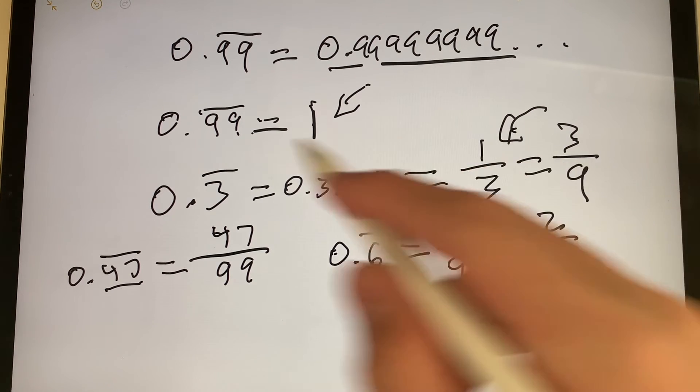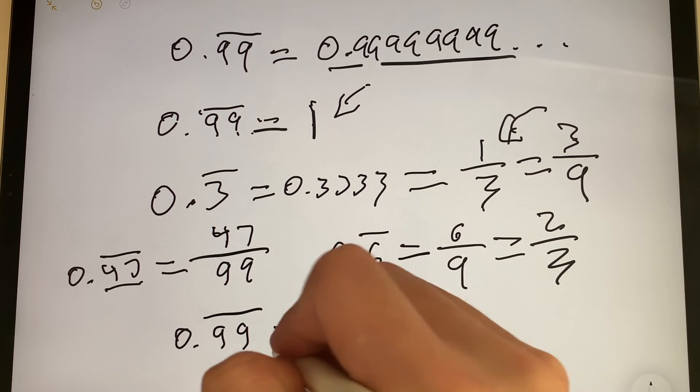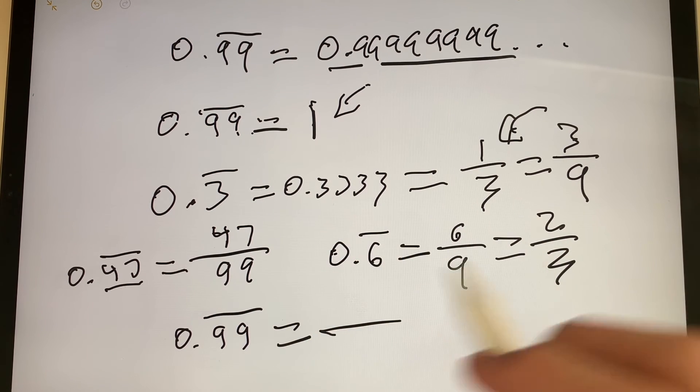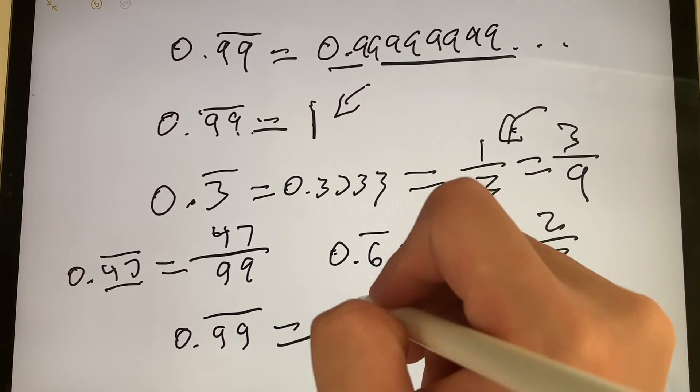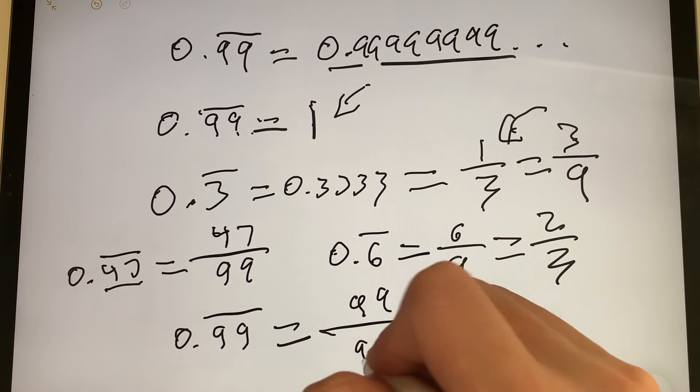Now, what do we do with 0.99? 0.99 repeating. That's equal to... What number is there? There's 99. 99 over one number is going to be also 99.